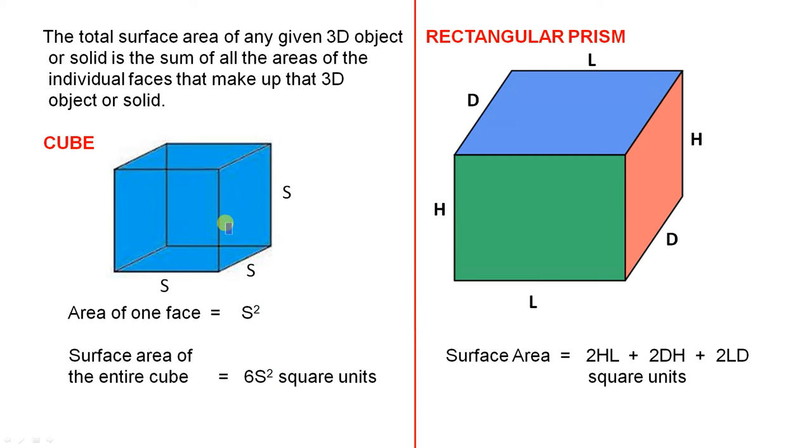Let's look at the cube, which is a three-dimensional object with six faces and all the sides are the same length. If we take one of the faces, the area of one face is S times S, which is S squared. So the surface area of the entire cube will be 6S² square units.